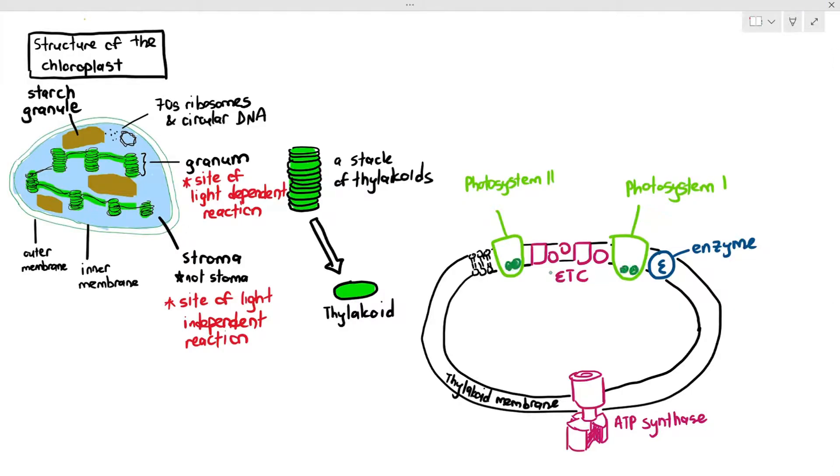And the photosystems are divided into two types. Photosystem 2 on the left and photosystem 1 on the right. Now, some students will ask me the question, why is photosystem 2 on the left and 1 on the right? Shouldn't it be the other way around? If I'm not mistaken, the reason is because photosystem 1 was discovered first.